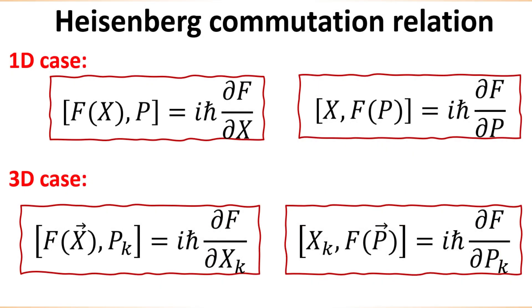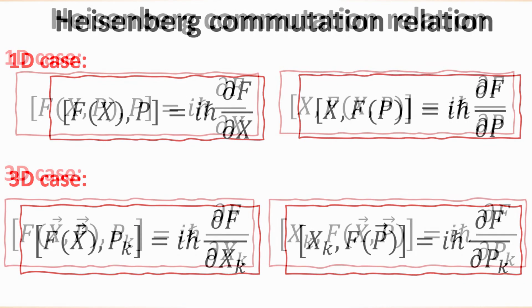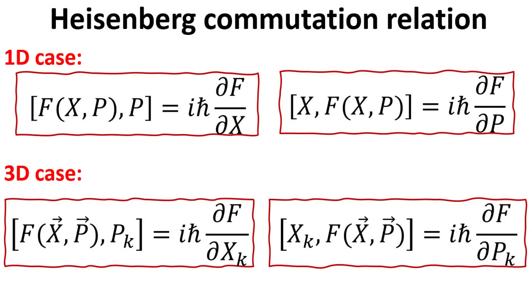In summary, we have the following commutator relations involving functions of x and p. These results can also be extended to the 3D cases shown. More generally, the same relations hold even for general functions of x and p.